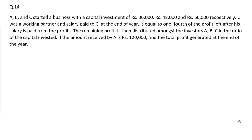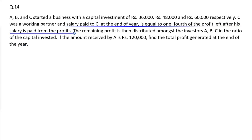C was a working partner and salary paid to C at the end of a year is equal to one-fourth of the profit left after its salary is paid from the profits. The remaining profit is distributed between investors A, B and C in a ratio of their capital invested. If the amount received by A is 1,20,000, find the profit generated at the end of the year.